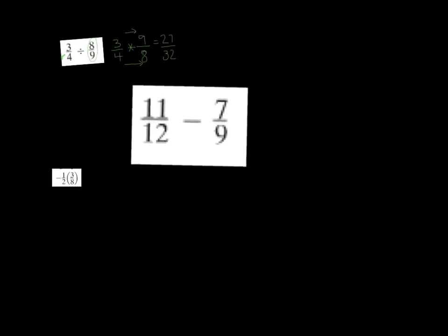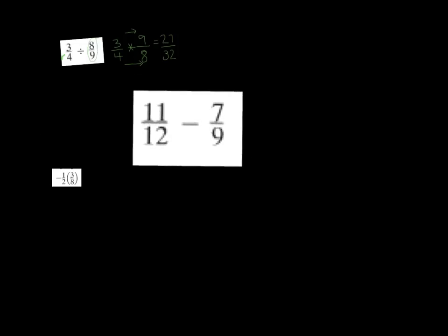Next one: we have 11 twelfths minus 7 ninths. We're subtracting, which means we need a common denominator, because 12 and 9 are not common denominators. So we ask: what could be common to both? Think of your multiples — the first common multiple you'll come across is 36.